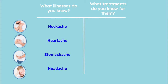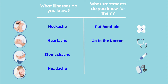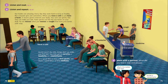And what treatments do you know for them? There are different types of treatments — traditional medicine. Probably for a neck ache, you might think of putting on a special band-aid. For a heartache, you might think to go to the doctor because that's serious. Maybe if you have a stomach ache and a specific type of illness, you will need to get a shot, or maybe take some medicine. Same thing with a headache, right? Some of these illnesses and treatments we already know — we've heard them.